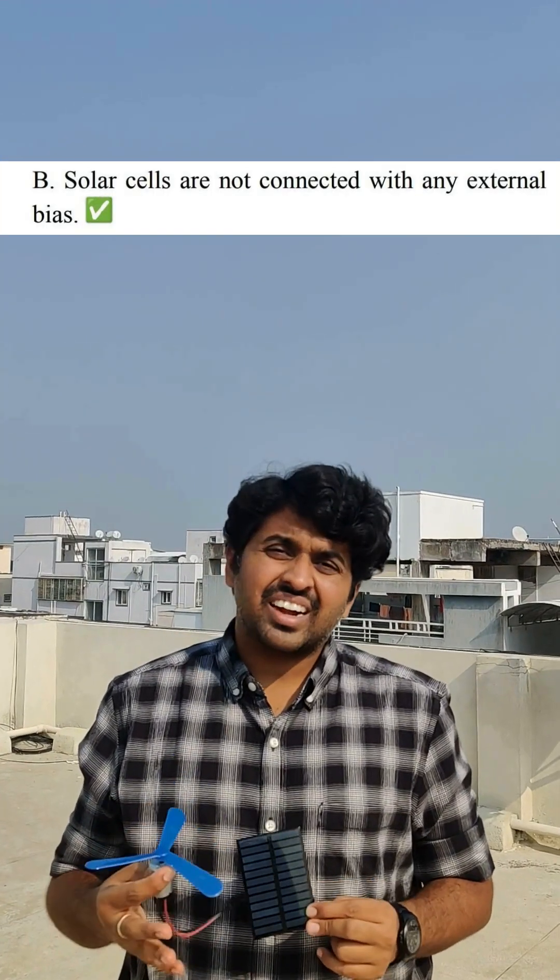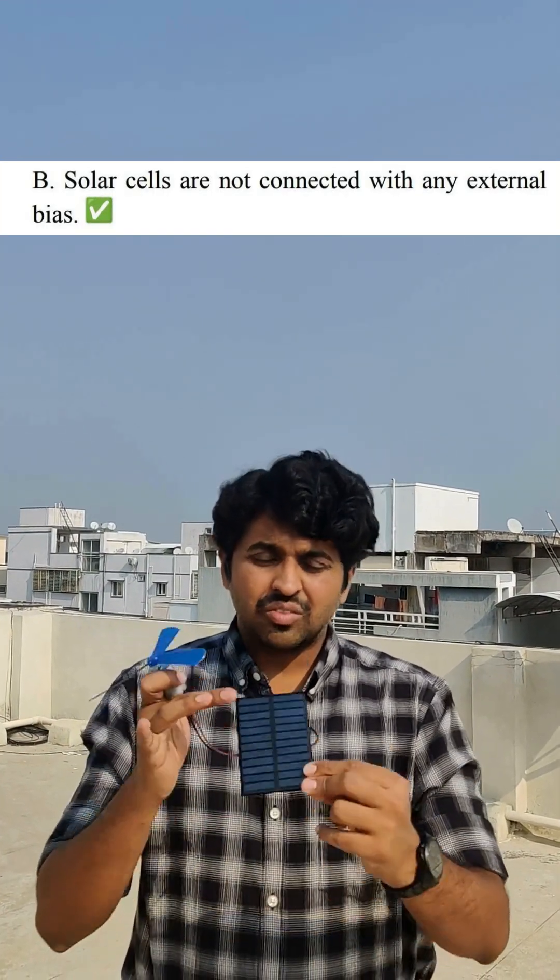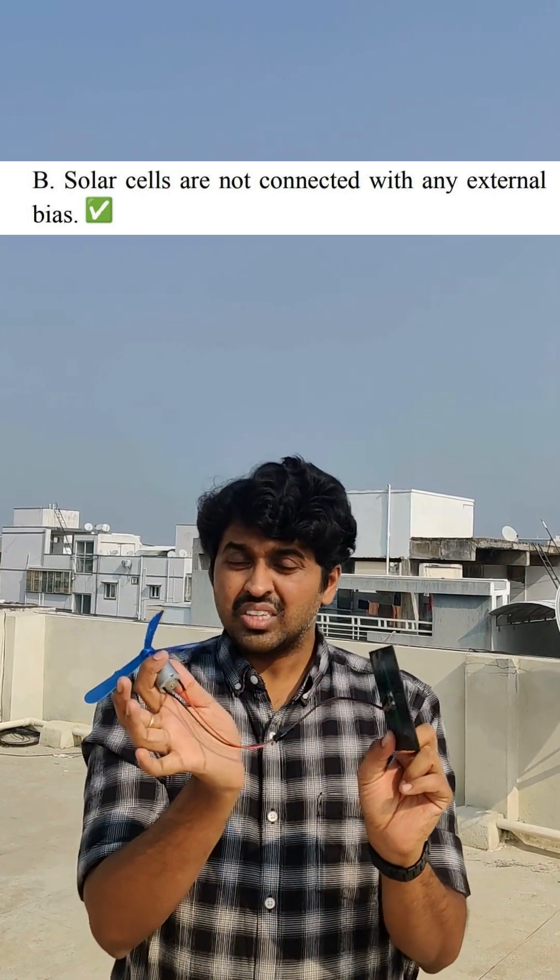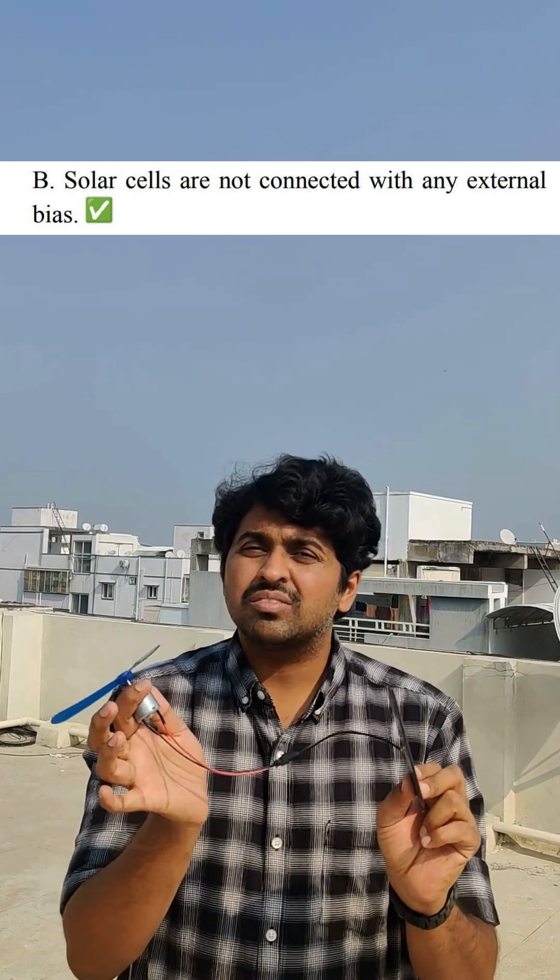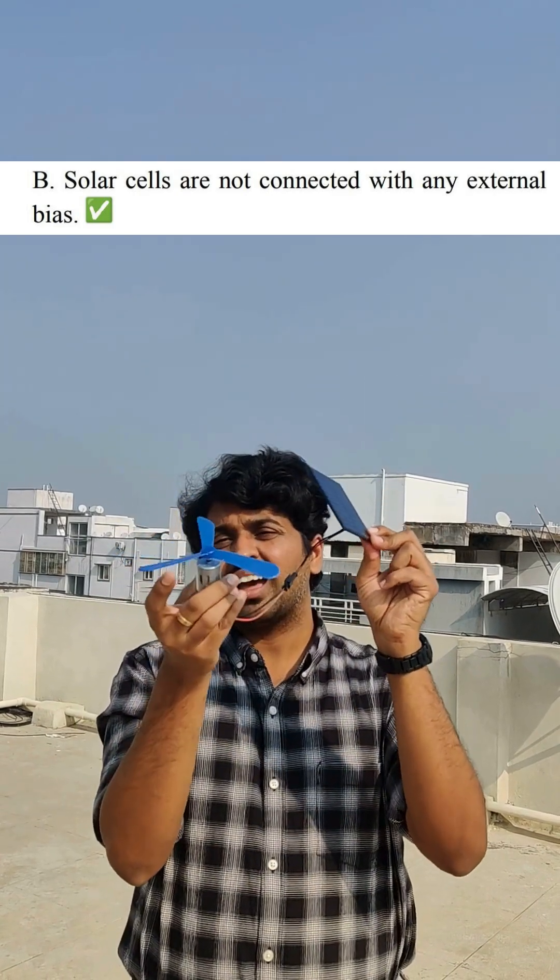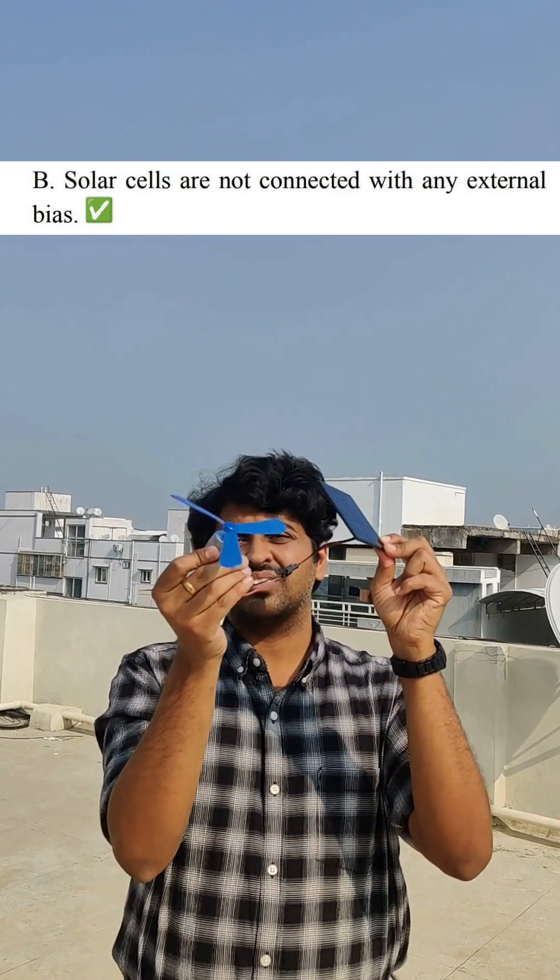Solar cells are not connected with any external bias. We have a solar cell here directly connected to a motor. There is no external source of EMF connected to this solar cell. Let us put this solar cell to the sun and rotate the motor.